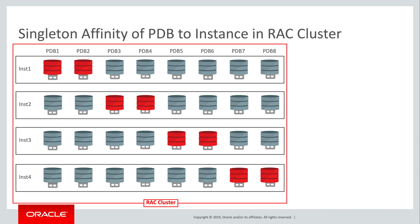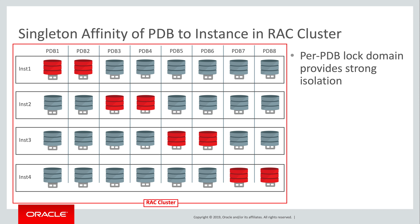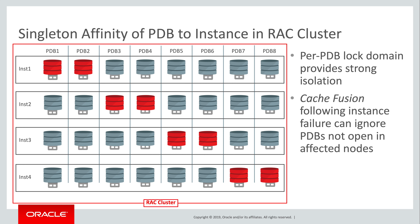The tight integration of multi-tenant with RAC includes a capability known as a per-PDB locked domain. This provides strong isolation of a PDB's data and locks to the node or nodes in which it's open. So, with PDBs 1 and 2 affinitized to node 1, PDBs 3 and 4 to node 2, 5 and 6 to node 3, and 7 and 8 to node 4, only the SGA of node 1 has any data or locks to do with PDBs 1 and 2. Therefore, in the event of a node failure, cache fusion need not consider any data or locks for PDBs not open in that node.